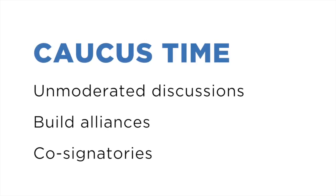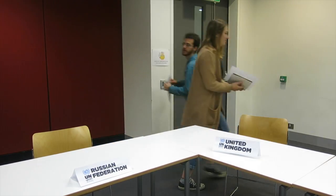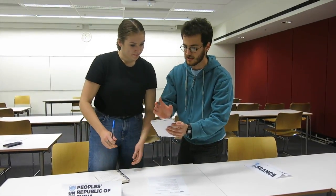There is one other way to interrupt a debate. Caucus time is an opportunity for unmoderated discussions, meaning that you can get up, run across the room and talk freely. You can use this time to suss out the room, build alliances and push for your amendments. There is not usually time to debate all amendments, so the chair will choose those which are most popular — measured by those with the most co-signatories. You can ask for co-signatories through note passing, but caucus is an excellent time to persuade other delegates that your amendment needs to become a priority. We will now move to two minutes of caucus time.